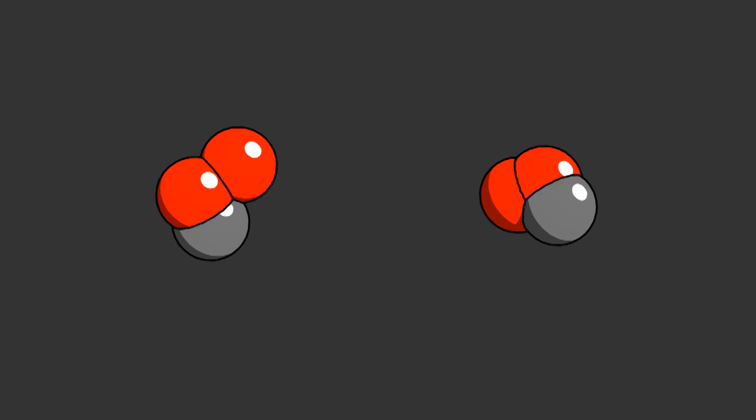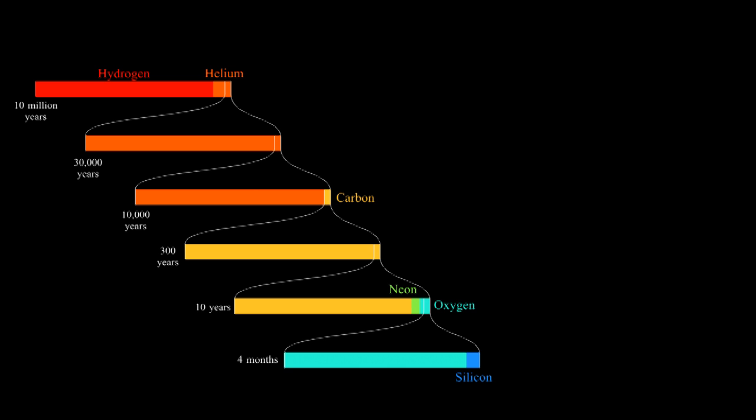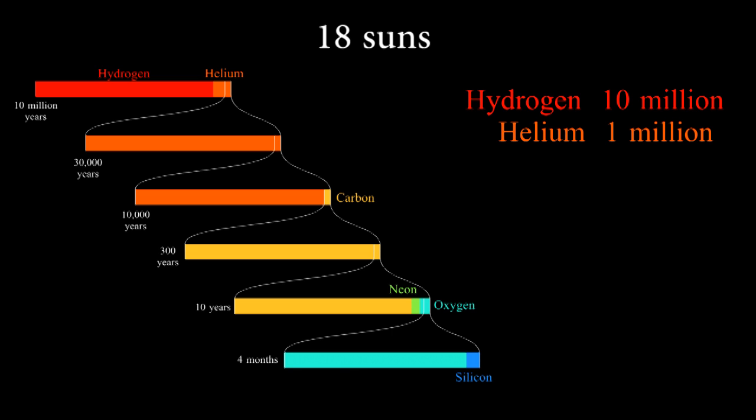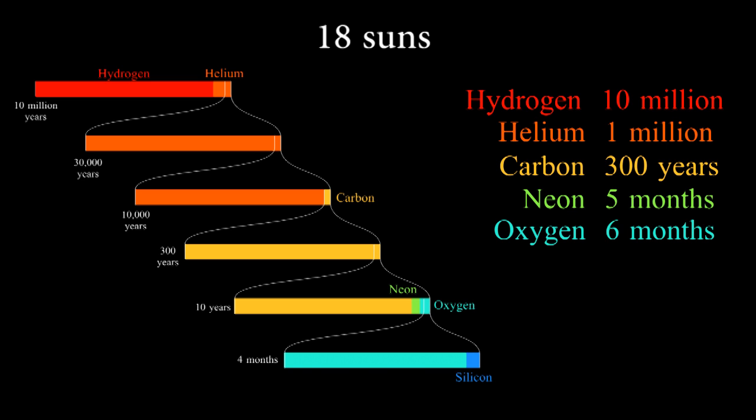A star that's 18 solar masses will burn hydrogen in its core for 10 million years. It will then burn helium for 1 million years, then carbon for 300 years, then neon for just 5 months, then oxygen for 6 months. Finally, it will burn silicon for just 2 days.